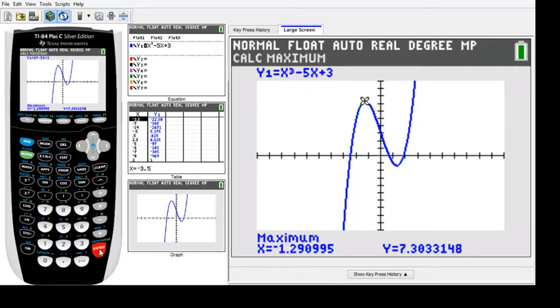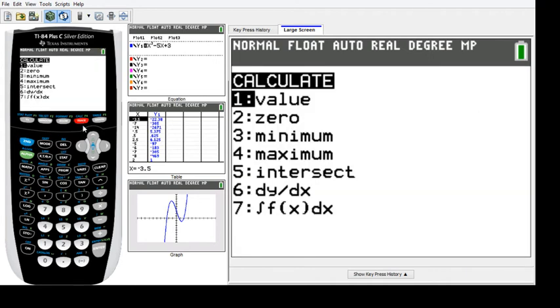For the local minimum, go to Second, Trace again, and this time choose Minimum.